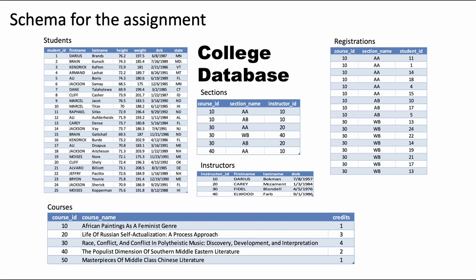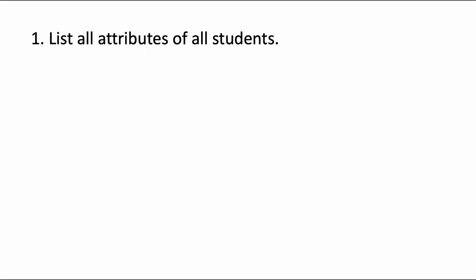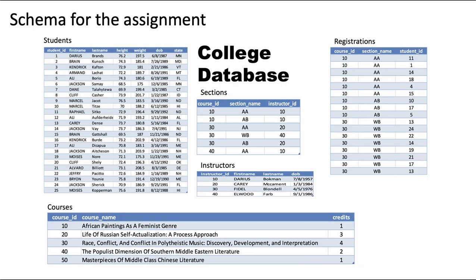Which table among all these tables contains the information we want? The question says list all attributes of all students, so it's very clear that it is the students table that contains the information that we want.